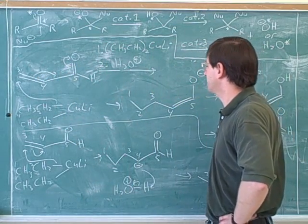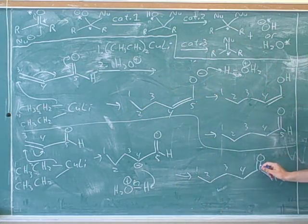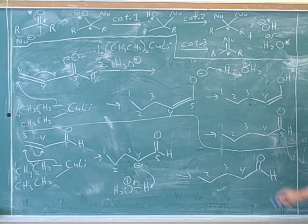This is called a conjugate addition because in the middle, both of the pi bonds might be involved. But ultimately, the pi bond at the end gets reformed. It's as if it wasn't involved in the first place.